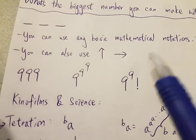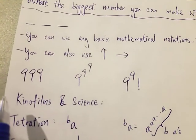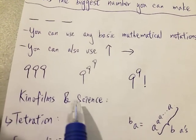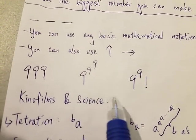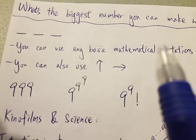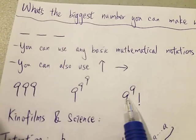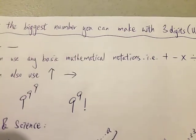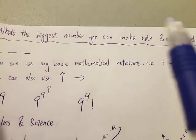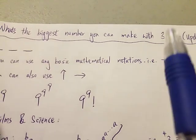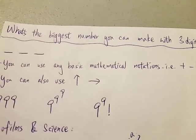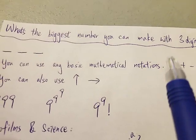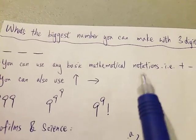However, someone in the comment section — this guy Cano Streams and Science — said that actually this is not the biggest number you can make with three digits. And it turns out that he was right. Today we're gonna find out how.